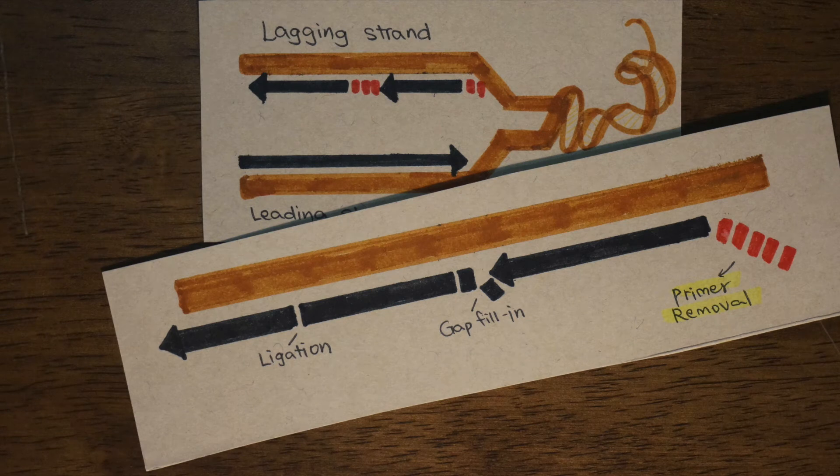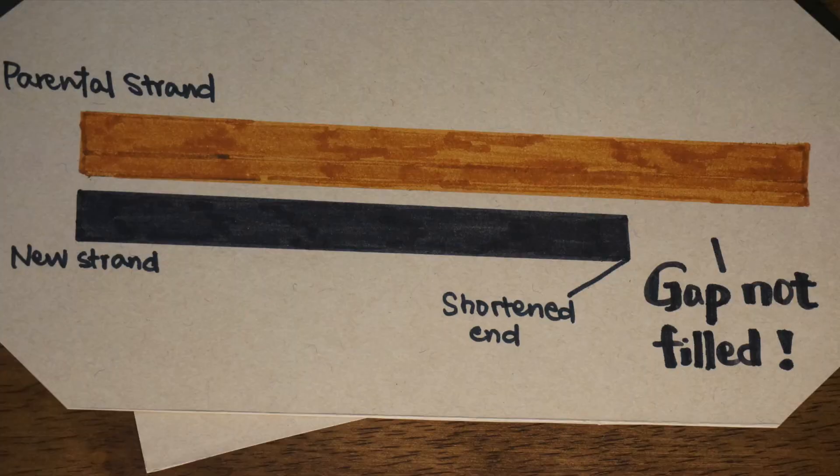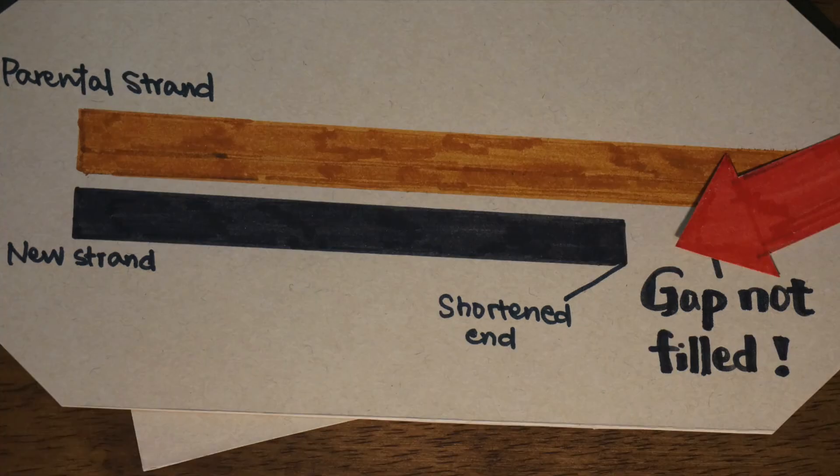This is because the enzyme requires a three prime hydroxyl group from an RNA primer to commence nucleotide synthesis. Eventually, this would result in the erosion of chromosomes, loss of genes, and apoptosis of the cell.